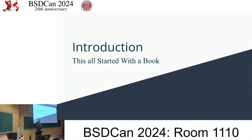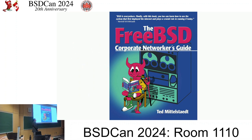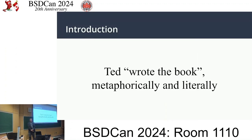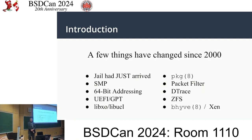This all started with a book. Some of you may remember Ted Middlestadt's FreeBSD Corporate Networker's Guide, around 2000 when Jael landed. He wrote the book literally and metaphorically. Michael W. Lucas tells me he was terrified Ted would keep at it and suck the oxygen out of the room — fortunately there was oxygen left. A few things have changed since 2000: Jael had just arrived, thank you PHK; SMP was just skidding onto the scene; novel concepts like 64-bit addressing were arriving; we moved to UEFI-GPT; and LibXO-UCL came along.